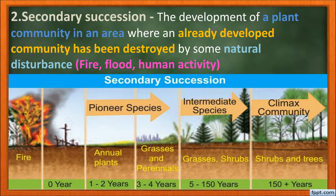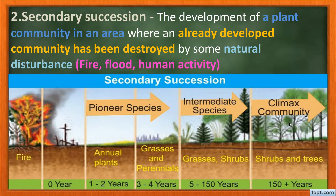Secondary succession is the development of a plant community in an area where a community was already present but has been destroyed by natural disturbances like fire, flood, or human activity. In secondary succession, in the first two years annual plants appear; in the third and fourth year grasses and perennials appear; after 5 to 150 years intermediate species like grasses and shrubs grow; and after 150 years shrubs and trees are present, forming the climax community.